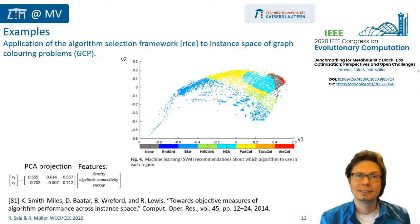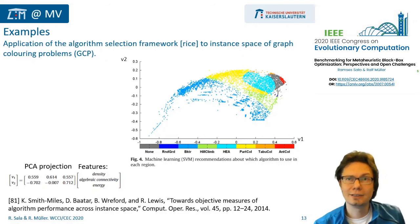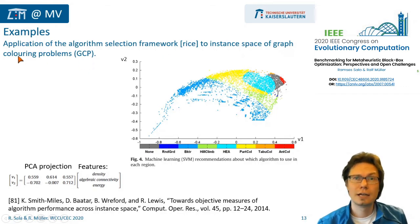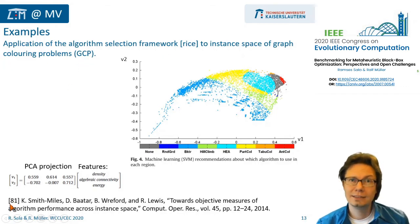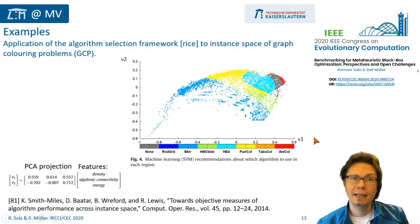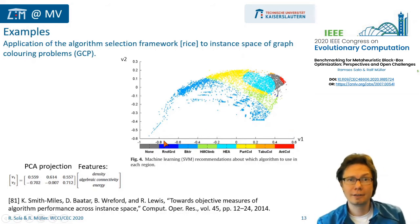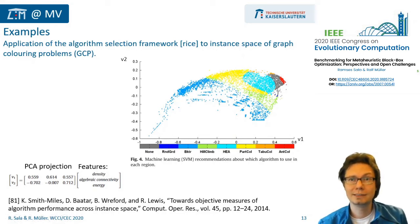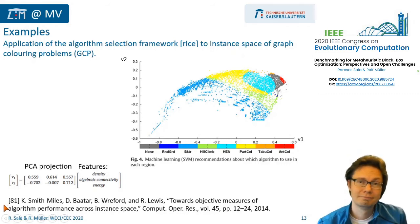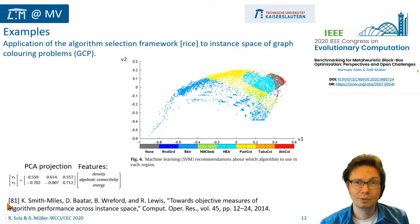In this first example, the authors applied and implemented the idea of the algorithm selection framework to algorithm selection for graph coloring problems. Basically, the authors found a way to describe and map the problem instances in a 2D plane, and then they used machine learning — support vector machines — to relate the performance of the various algorithms with respect to this feature space. And they got a sort of map which basically tells you which algorithm to choose if you know the problem instance features. It's a specific problem, but the general ideas could be applicable to many other problems.